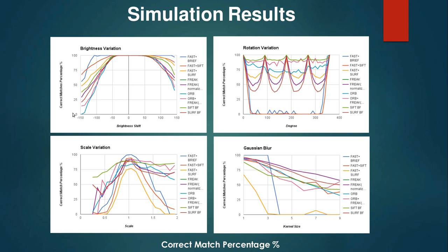Looking at the correct match percentage with change in brightness, rotation, scale, and Gaussian blur: for rotation, SIFT wins; for scale, SIFT and FREAK are mostly similar; for blur it's basically FREAK. Almost all algorithms have good performance for brightness — the correct match percentage is nearly 100% in the range of minus 50 to 50, primarily because all algorithms have been normalized, so a small brightness delta has little effect.